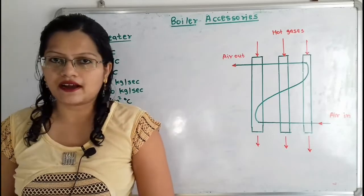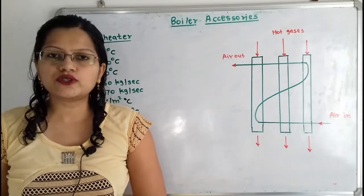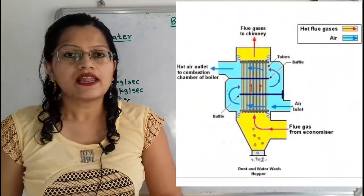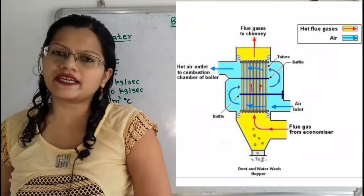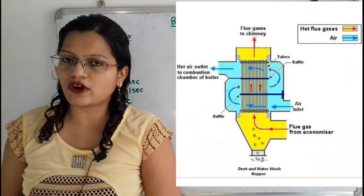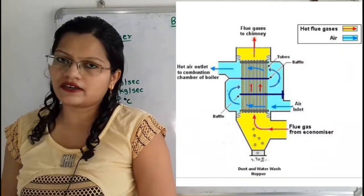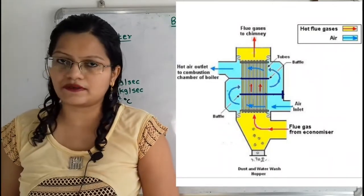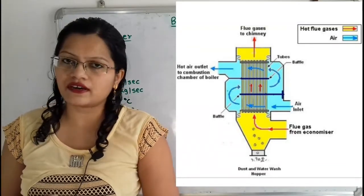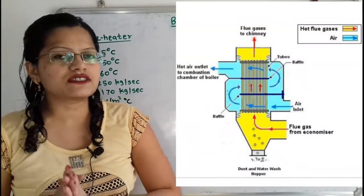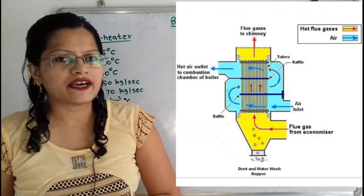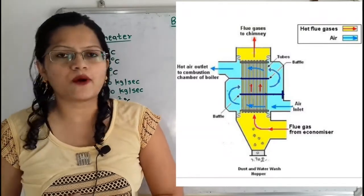Hello friends, this is Priyanka. Today we are going to solve a problem on air preheater from the chapter boiler accessories. Let us first understand why this air preheater is used. Heat carried by the flue gases coming out from the economizer is used to preheat the air before supplying to the combustion chamber. It is found that a 20 degree Celsius rise in temperature of air increases the boiler efficiency by 1%.